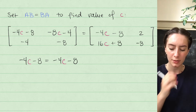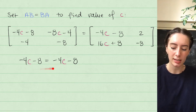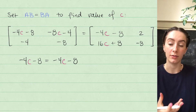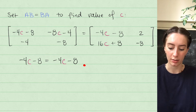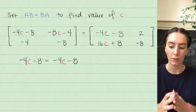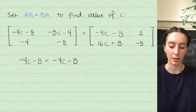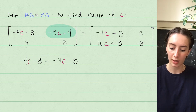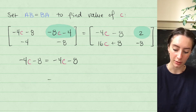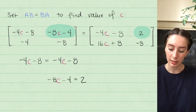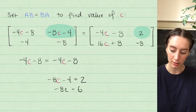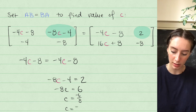Since the first entry doesn't constrain C — any value would satisfy it — we use the second entry. Setting negative 8C minus 4 equal to 2, we solve: negative 8C equals 6, then dividing both sides by negative 8, we get C equals negative 6 over 8, or C equals negative 3 quarters.